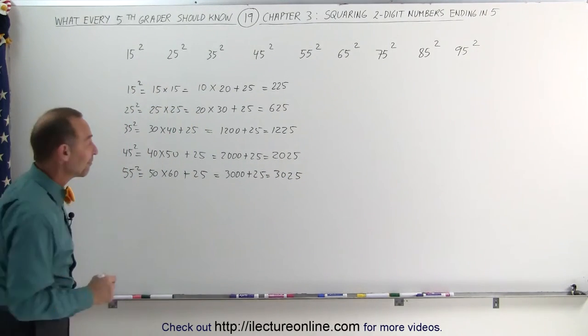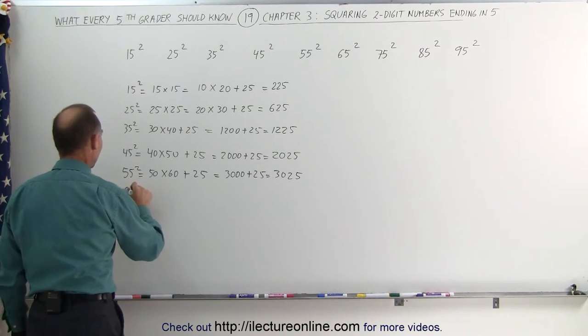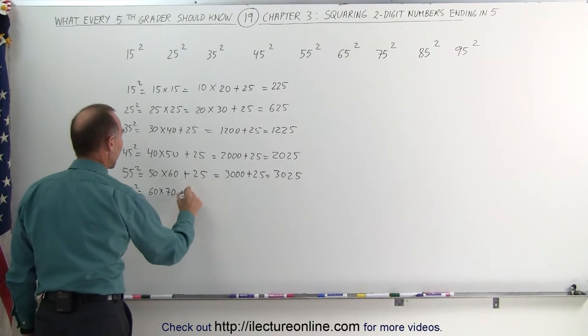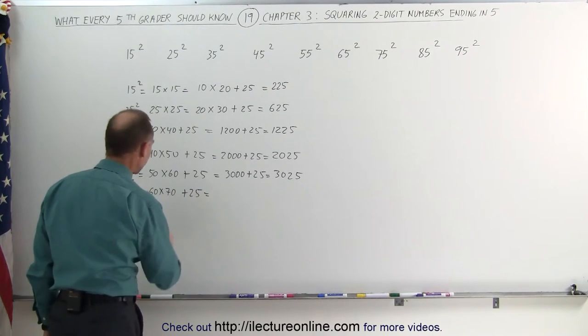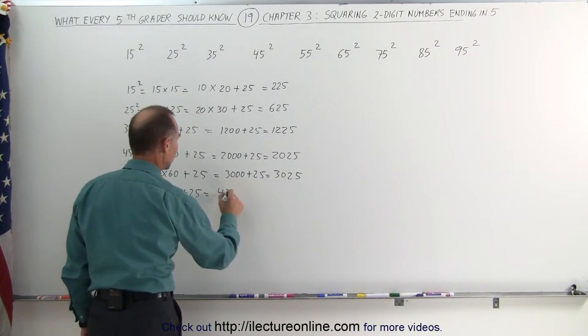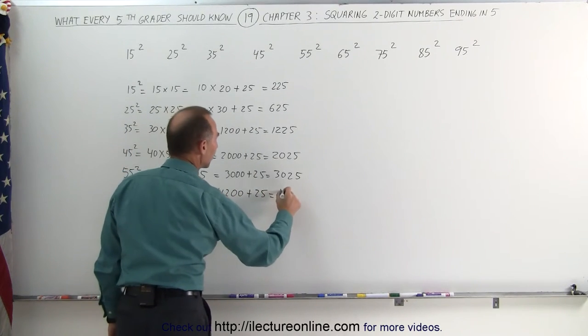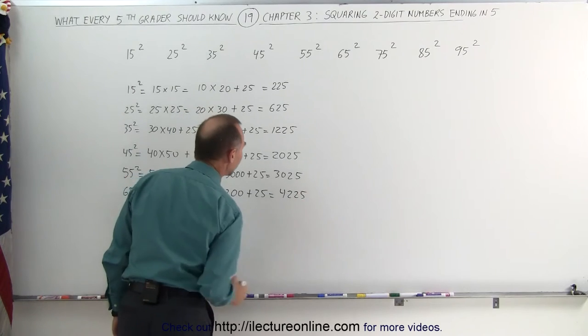Now let's try 65 squared. 65 squared, that's the same as 60 times 70. Again, subtract 5 and add 5, add 25 to that. 60 times 70 is 42, add 2 zeros, plus 25, that would be 4,225.